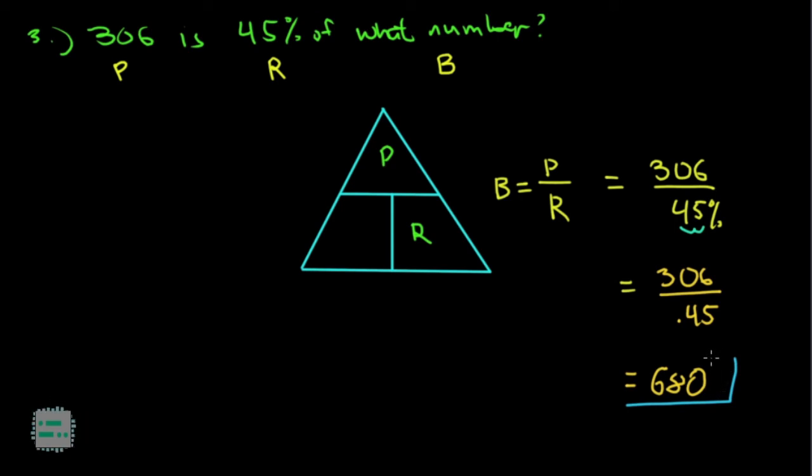In fact, you can double-check this. Because we know that 680 is our base. If you want to check that it's really 45% of 680, find the percentage. You multiply this by 45%, so 0.45. Multiply 680 by 0.45 and you'll get back to this, which is your 45% of 680.